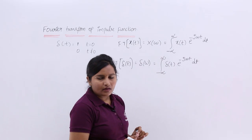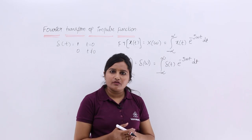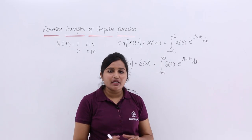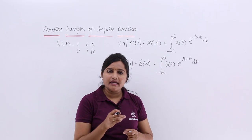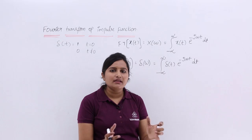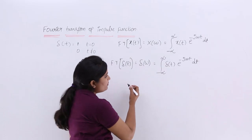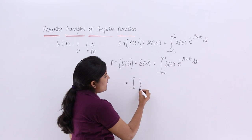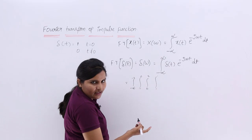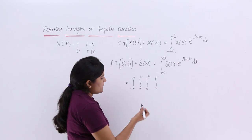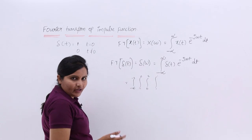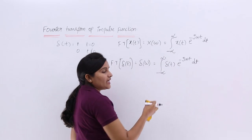As we already discussed in the properties of the impulse function: when an impulse function appears inside an integral, there is no need to calculate the full integration, because the impulse function has a value only at t = 0. The integration from minus infinity to infinity can be broken into sub-intervals, but in every interval except at t = 0, the impulse function is 0, so δ(t) multiplied by e^(−jωt) will be 0 everywhere except at t = 0.